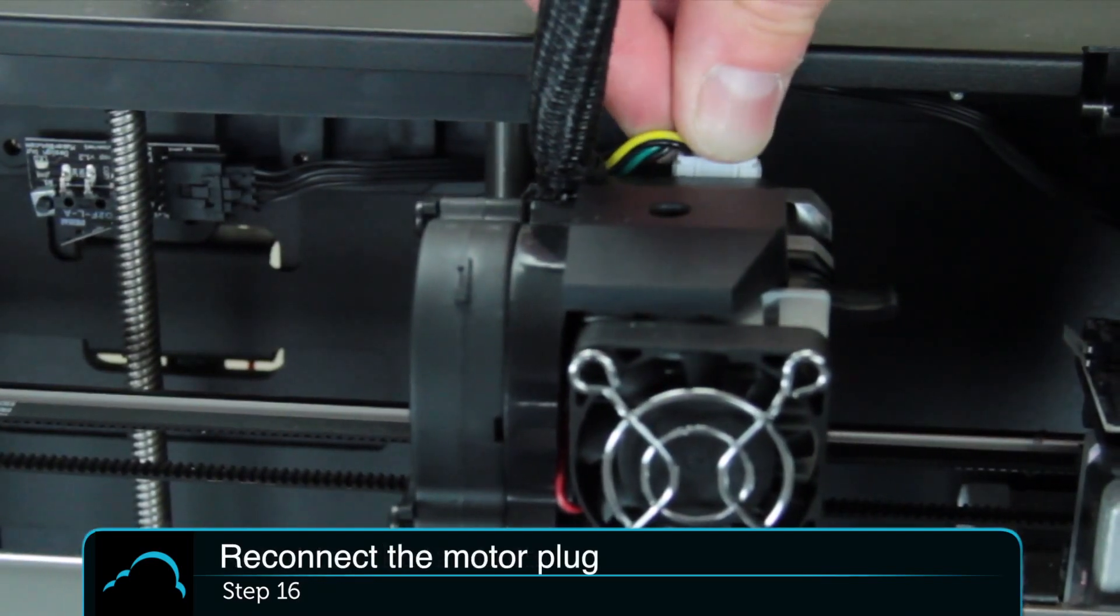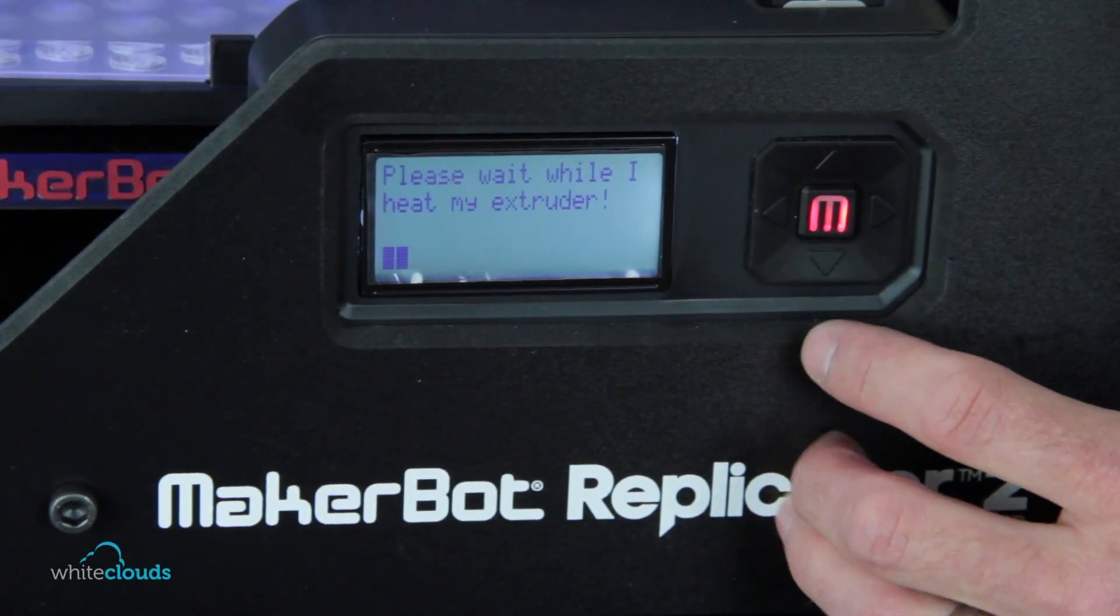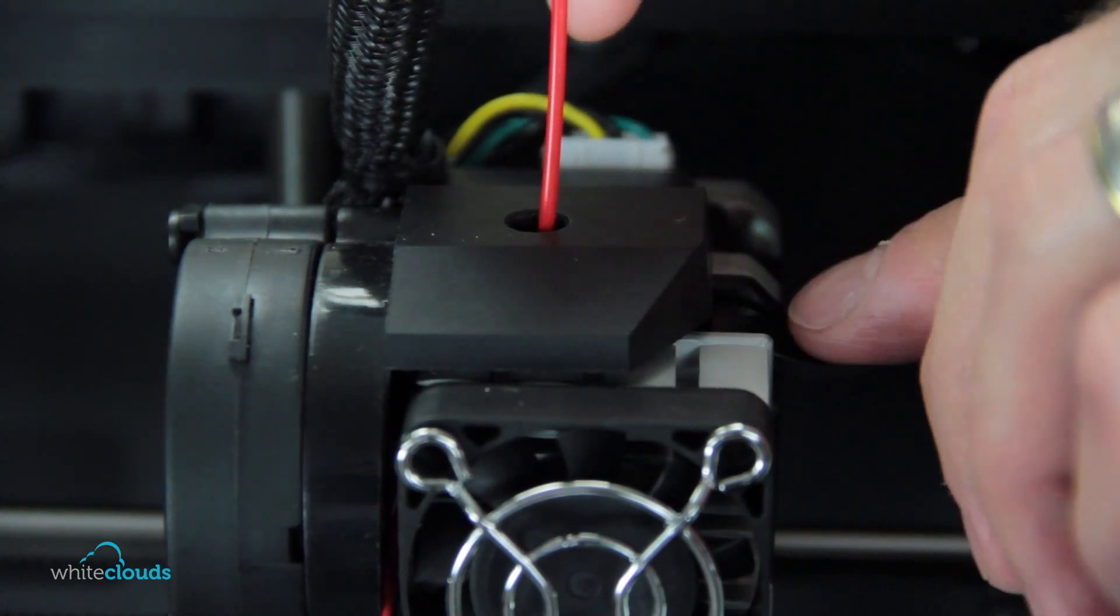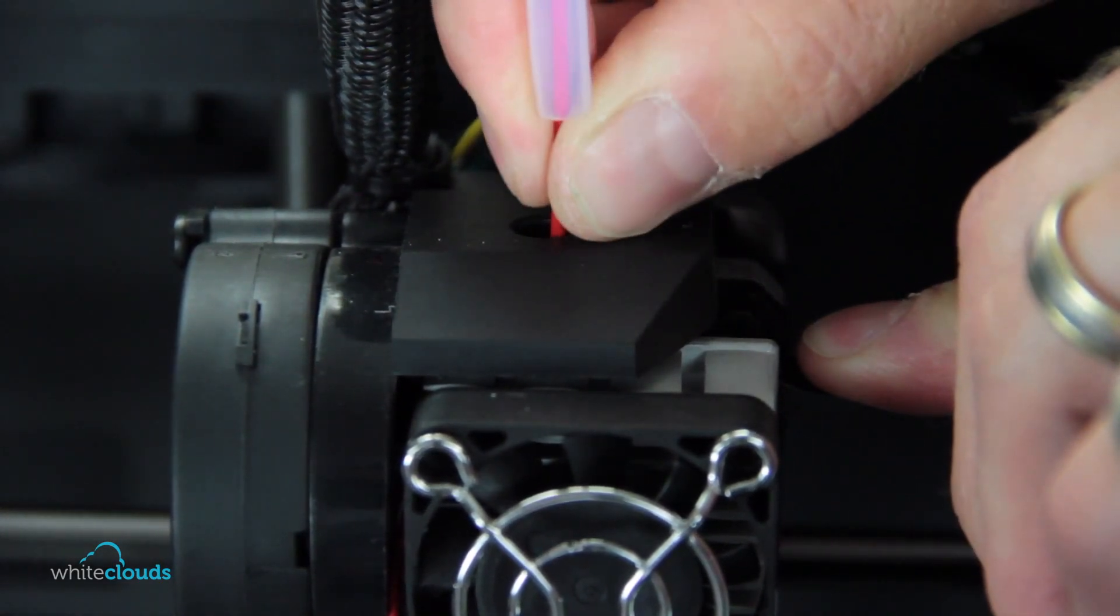You're now ready to load your favorite color of filament. You'll load the filament just a little bit differently with the extruder upgrade in place. So, run the load script, push the lever down, insert the filament, and now you're ready to go.